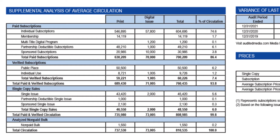In the Supplemental Analysis of Average Circulation section, you'll find data on how the magazine generated circulation using sponsored, membership, or multi-titled digital programs, public place distribution, and more.